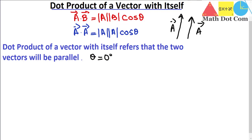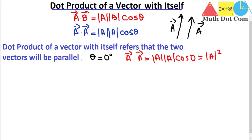If we put the value of theta as zero degrees in the formula, the dot product of a vector with itself equals the magnitude of A times the magnitude of A times cosine zero. Since cosine of zero equals one, we get the magnitude of A squared. This is the geometrical formula for finding the dot product of a vector with itself.